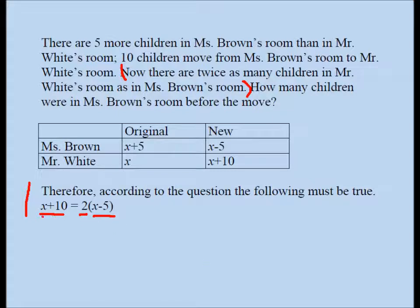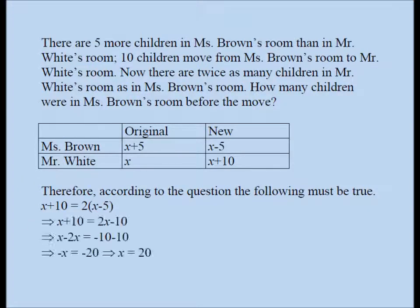So what I did here is I distributed two over X minus five. I got two X minus ten. And I subtracted two X from both sides. I have minus two X and two X goes away. I subtracted 10 from both sides. Plus 10 goes away and I have a minus 10 here. And X minus two X is minus X. Minus 10 minus 10 is minus 20. So X is 20.